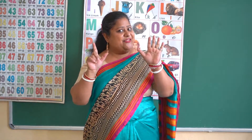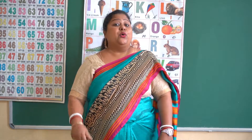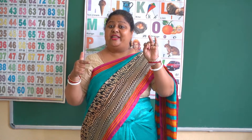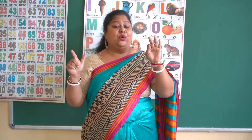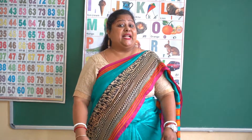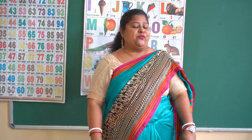Now children, tell me — how many colors are there in the rainbow? There are seven colors in the rainbow. They are violet, indigo, blue, green, yellow, orange, red.